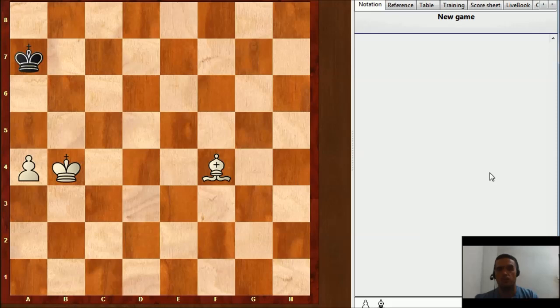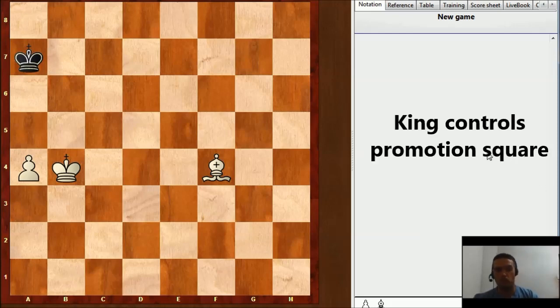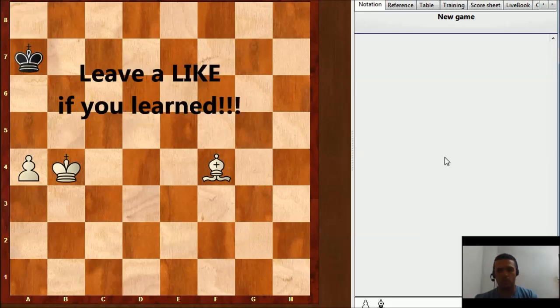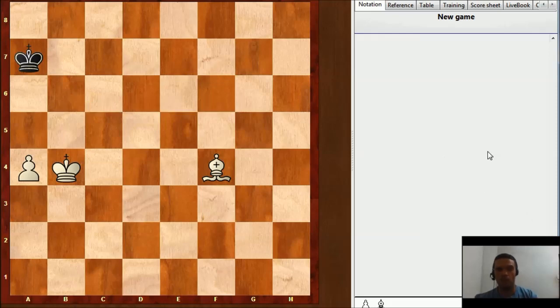So, remember, if there is a rook pawn on the board, and a bishop that moves over different squares than the promotion square color, then it is going to be a draw if the defending king controls the promotion square. I hope you have liked this video. Thank you for watching, and see you soon.